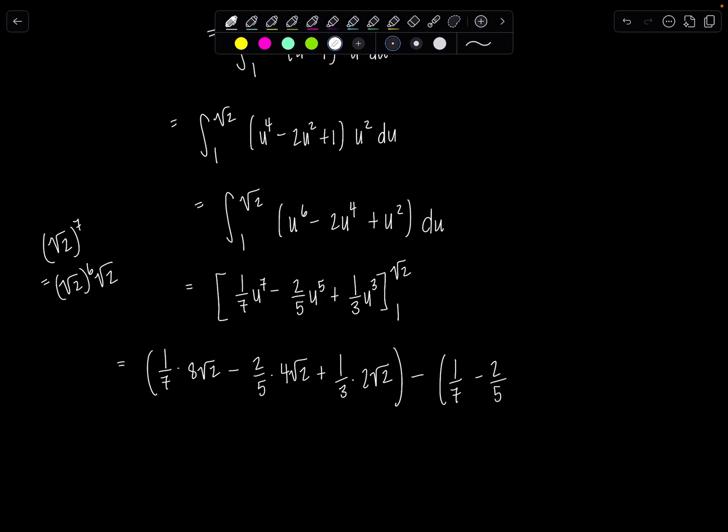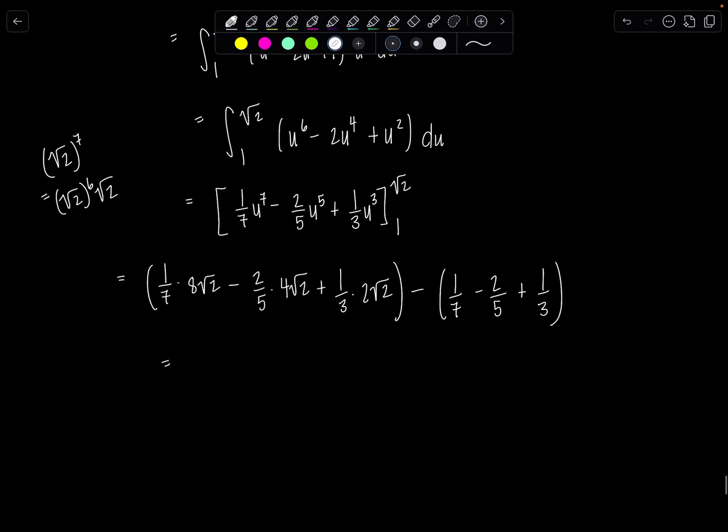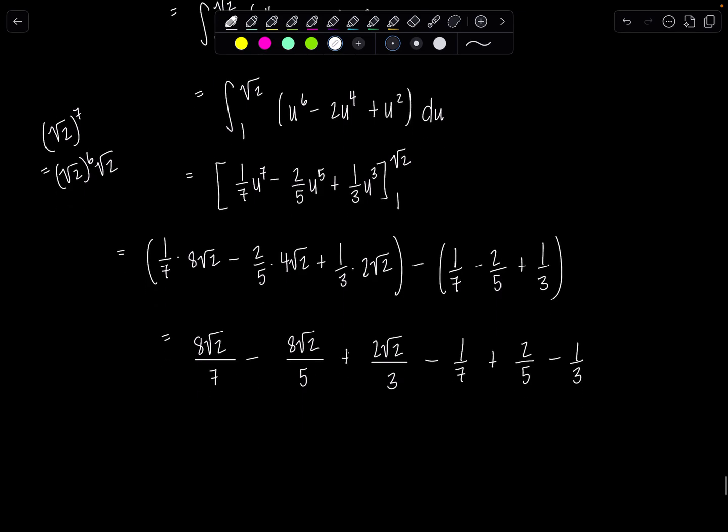So let's clean up a wee bit more. This is 8√2/7 minus 8√2/5 plus 2√2/3 minus 1/7 plus 2/5 minus 1/3. And we need to get a common denominator. The common denominator is 105. So the first term I need to multiply top and bottom by 15, this one by 21, this one by 35, and then same thing: 15, 21, 35.